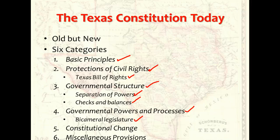The executive department established by the Texas Constitution includes the governor as chief executive officer of the state, and a lieutenant governor, secretary of state, comptroller of public accounts, and attorney general. The judicial department includes the Texas Supreme Court, the court of criminal appeals, civil courts of appeals, district courts, county courts, commissioner courts, courts of justice, and of the peace. The legislature has the power to create other courts.